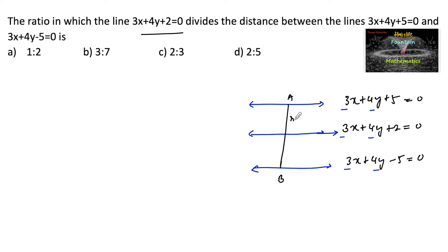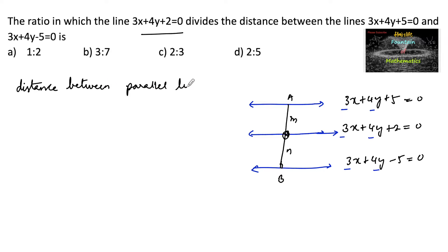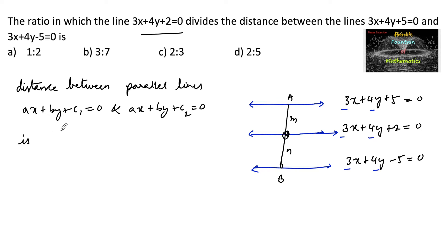Let us consider the ratio is m : n. Since we know that the distance between two parallel lines ax + by + c1 = 0 and ax + by + c2 = 0 is given by |c2 - c1| / √(a² + b²).